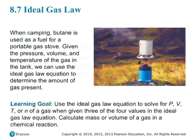We're going to take all of those relationships and combine them into one equation. One reason this might be useful is, let's say you're going camping and you have a butane tank for a portable stove. You could take the pressure, the volume, and the temperature of the gas in that tank and plug it into the ideal gas law equation to figure out how much gas you have.